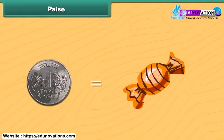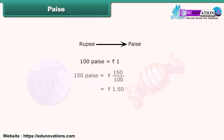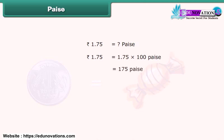Rahul purchased 1 toffee for 1 rupee. How will you convert this rupee into paise? 100 paise makes 1 rupee. Thus, 150 paise equals 150 upon 100 rupees, which makes 1.50 rupees. Thus, when we convert paise to rupees, we divide it by 100. How will you convert 1.75 rupees into paise? Multiplying 1.75 with 100, we get 175 paise.